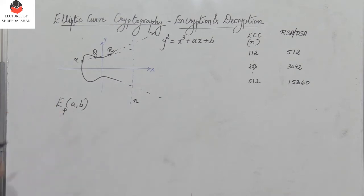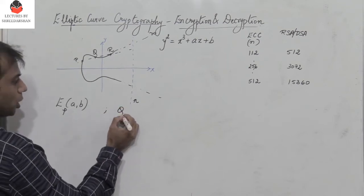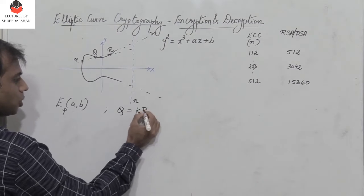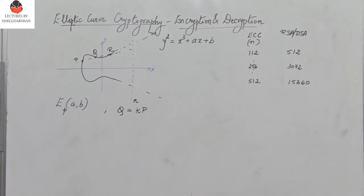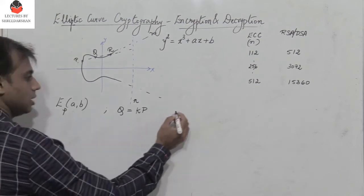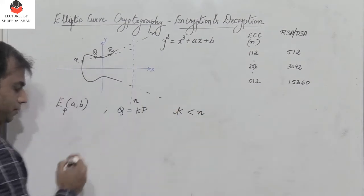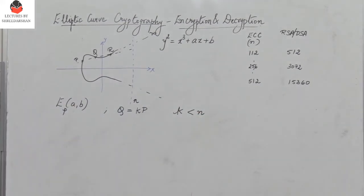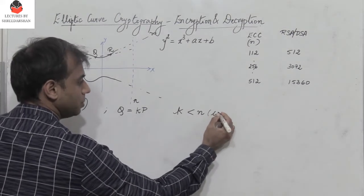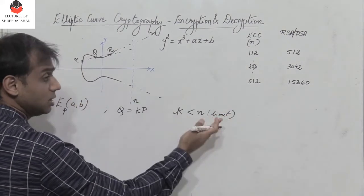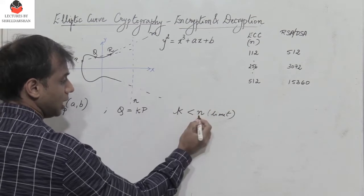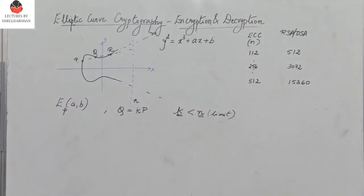We define the elliptic curve E_p(a, b) where Q and P are points on the curve. We get the point Q = k·P, where P and Q are points on the elliptic curve and k is less than n. So k is an integer value less than n, where n is the limiting number, and we limit the curve to this finite value.